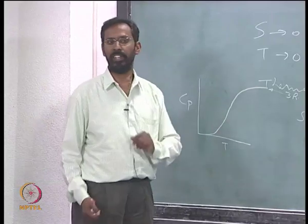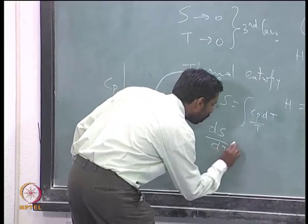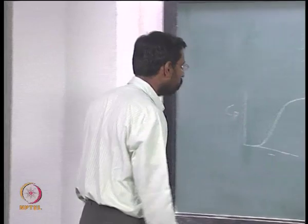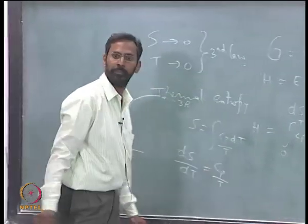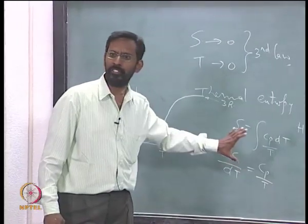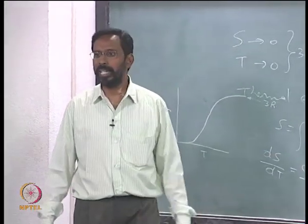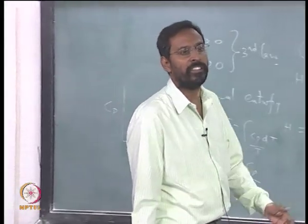And as a result, because this increases, if I try to see what is d s by d t, that means the rate of change of entropy with temperature that can be given as d s by d t will be c p by t. It will actually turn out to be c p by t. That means you can see that the rate of change of entropy with temperature is c p by t. And that means the entropy always increases with increasing temperature.